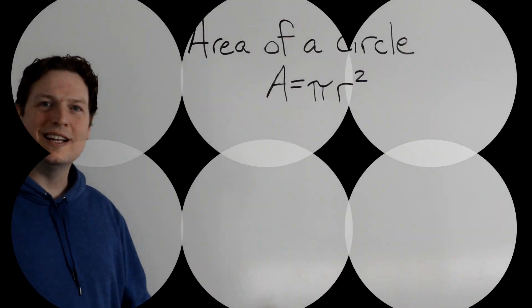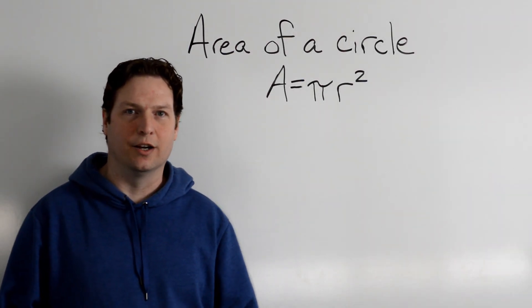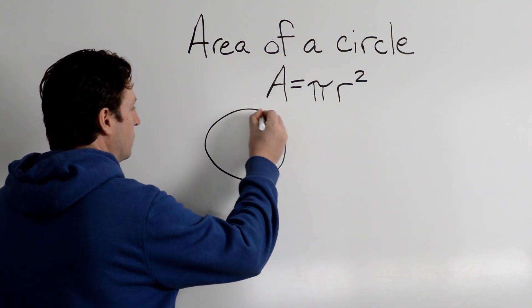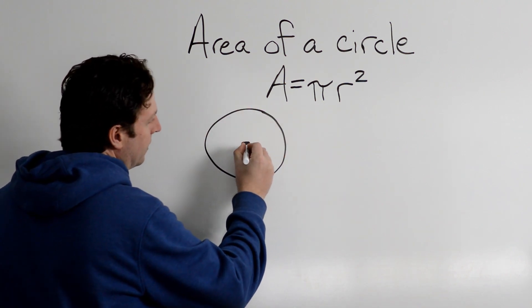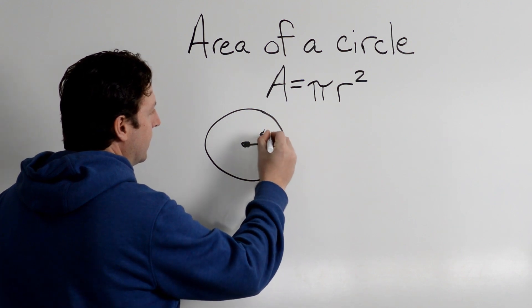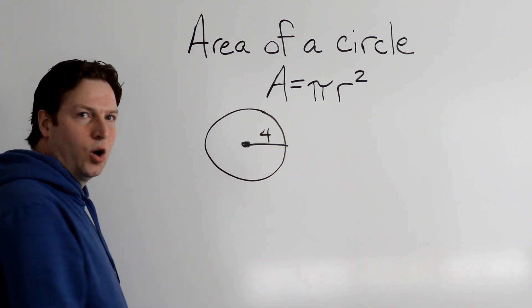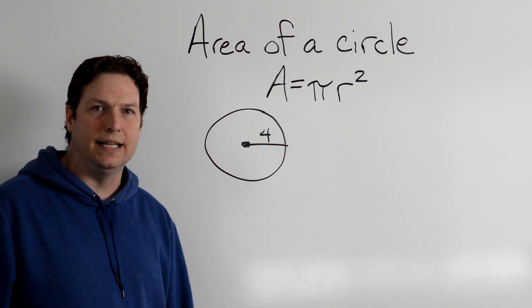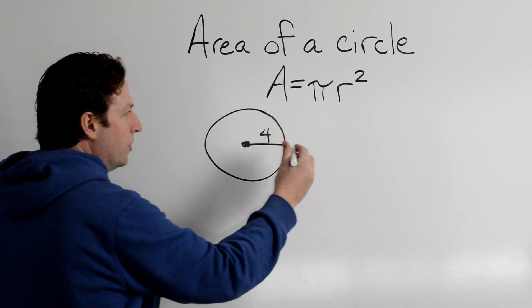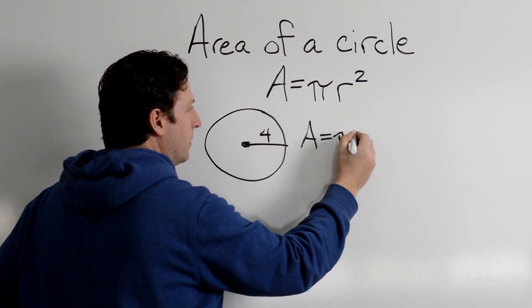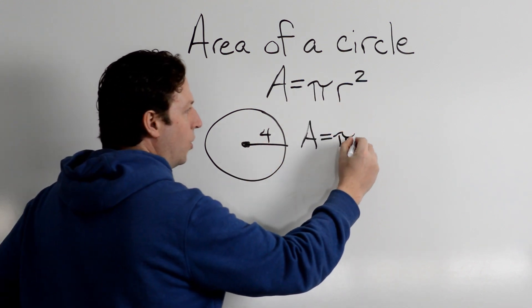Okay, we're going to dive right into an example here. So let's say we had a circle and we know that the radius is 4. If the radius is 4, we have everything else we need to find the area. So let's use our formula: A equals pi, we know the radius is 4.